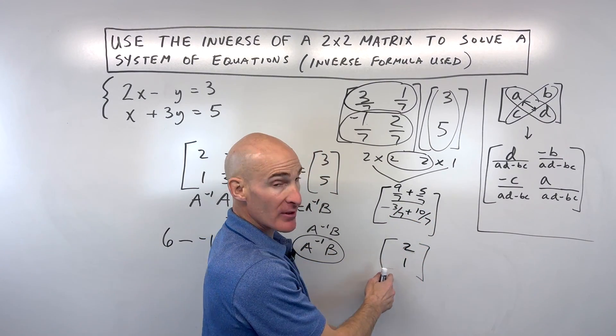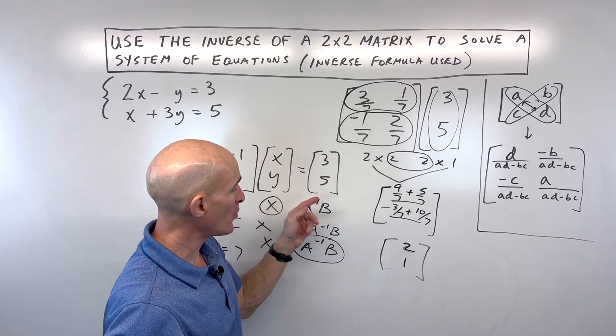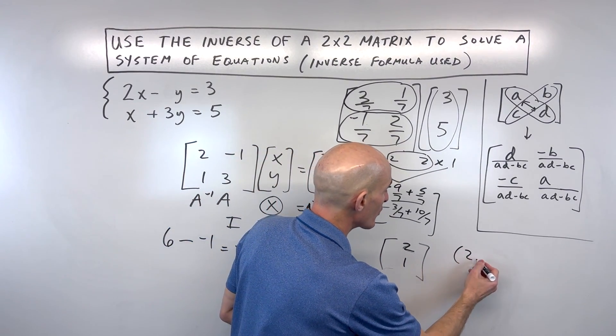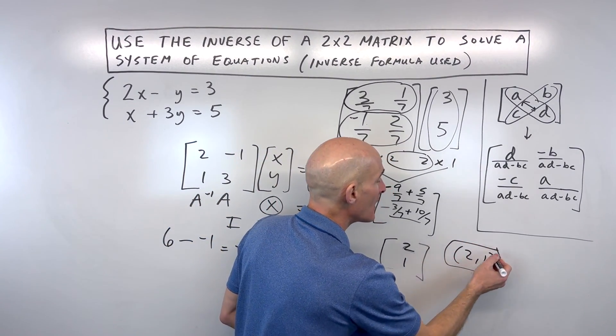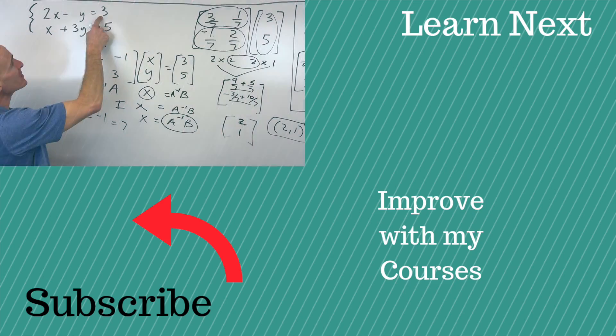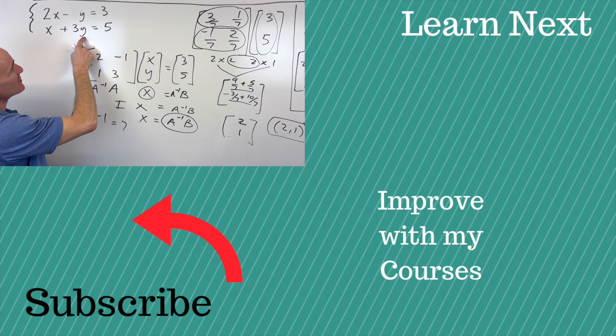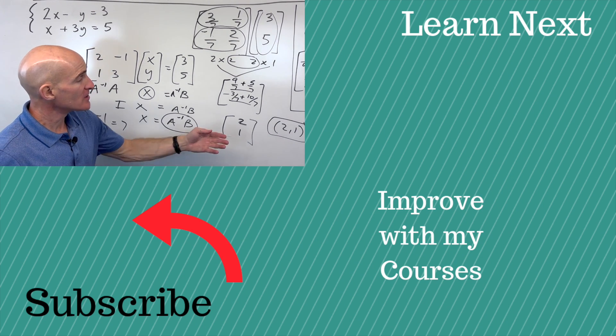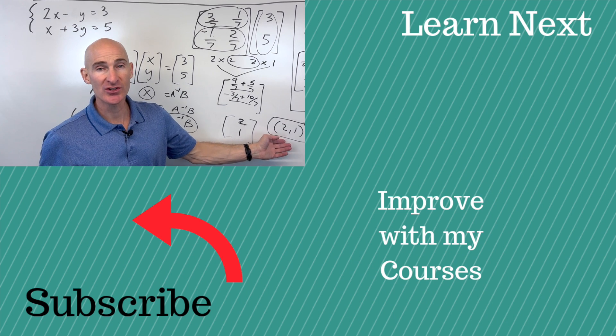So you can see we're ending up with our solution matrix, x, y, which is 2, 1, or we can write it as a coordinate, 2 comma 1. Now, you can check your work by putting it back into the original equation. 4 minus 1 is 3. 2 plus 3 times 1 is 3, so 2 plus 3 is 5. It makes both equations true, so we know that this is the solution to our system.